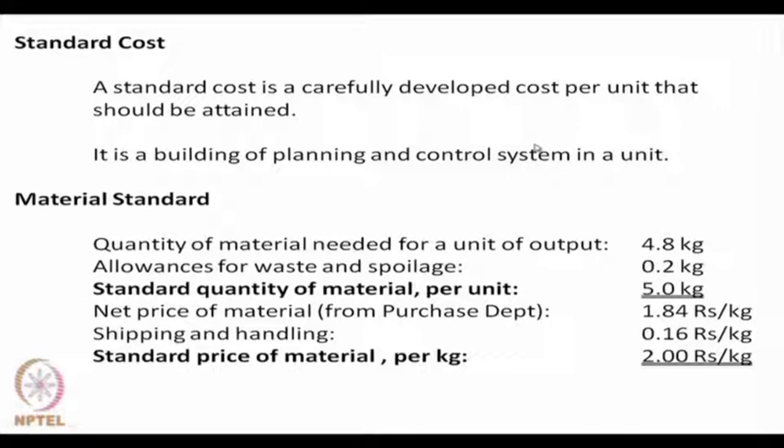Now we take up a very important concept: standard cost. A standard cost is a carefully developed cost per unit that should be attained. It is a building block of planning and control systems at the unit level. A budget is a target for a group of items for an entire period, whereas standard cost is a target for a unit of an item — that is the difference. To be able to control costs, one needs to have a standard cost. Here we shall discuss standard material cost, standard labour cost, and standard variable overhead expenses.